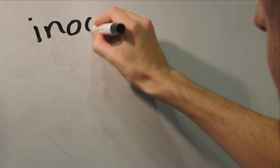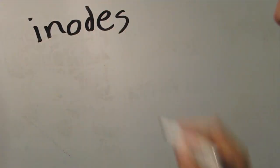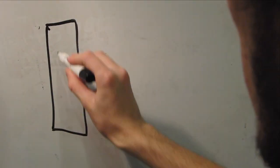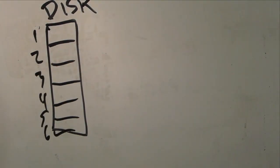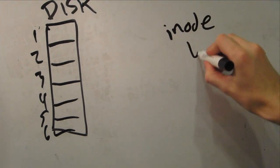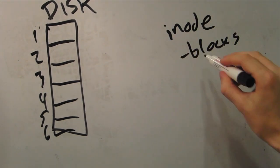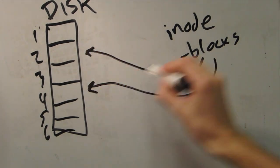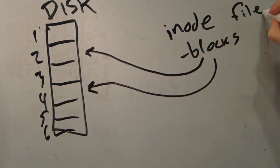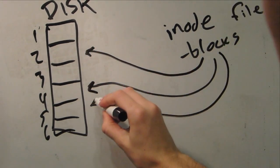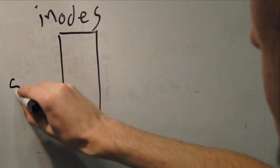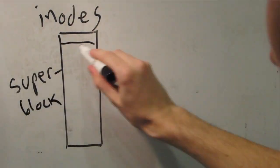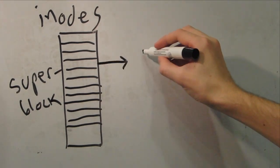We use inodes to keep track of these broken up pieces of files. The disk is divided into equally sized blocks, each of which can be assigned to any file. If a file is larger than a single block, it is put into multiple blocks. Each file has an inode associated with it that stores which blocks make up the file. All inodes are the same size and are stored in an array in the superblock, making them easy to look up.